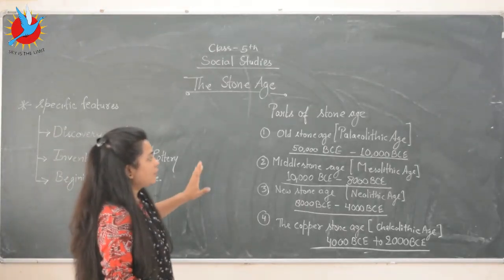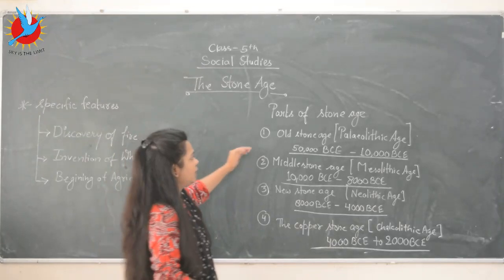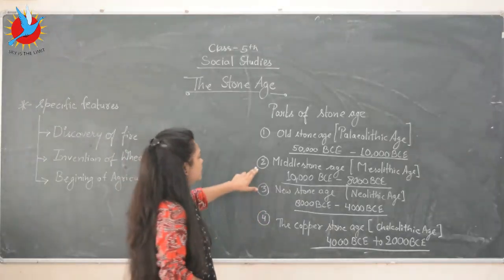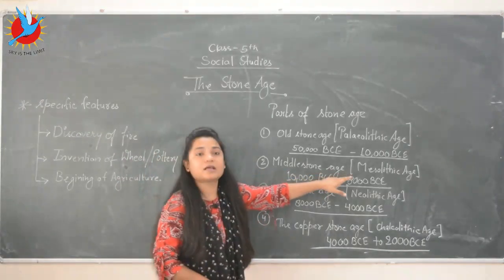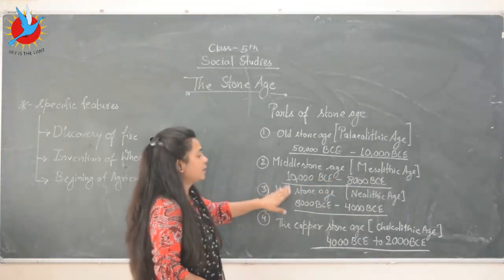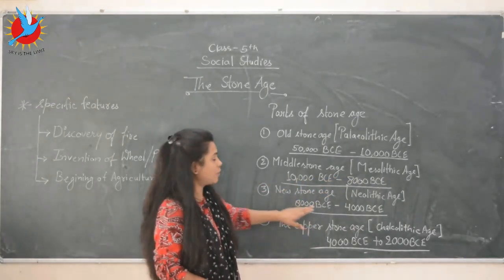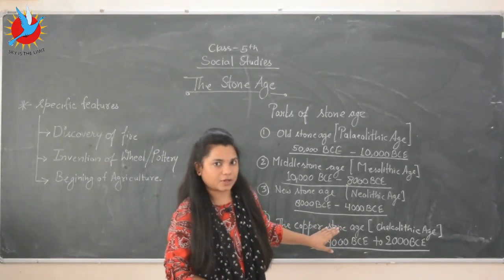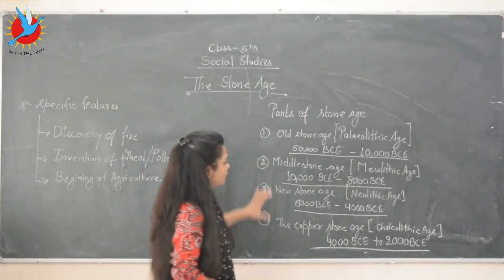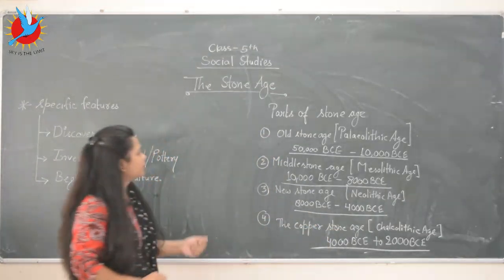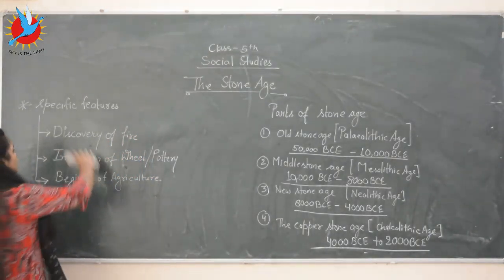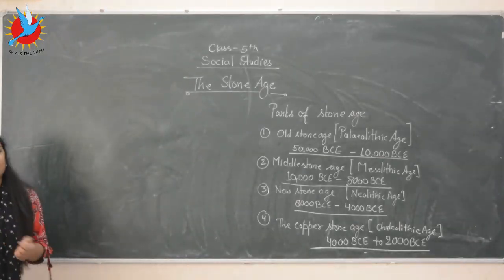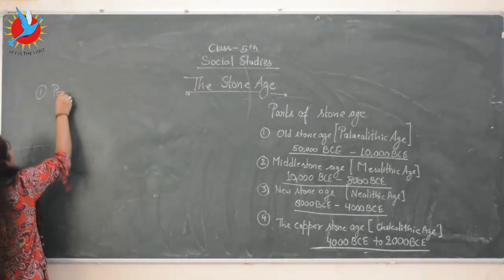The Stone Age has four parts. The first one is the Old Stone Age, that is the Paleolithic Age. The second one is the Middle Stone Age, that is the Mesolithic Age. The third one is the New Stone Age, the Neolithic Age. And the fourth one is the Copper Stone Age, that is the Chalcolithic Age. We are going to discuss them one by one, starting with the Paleolithic Age.